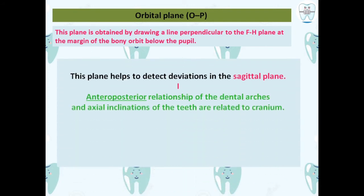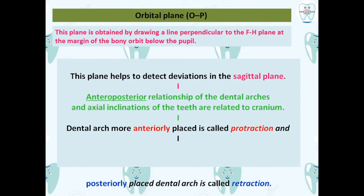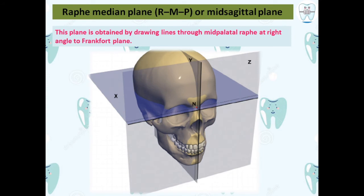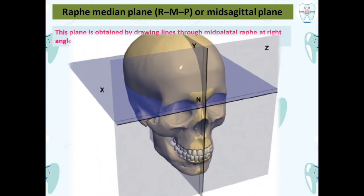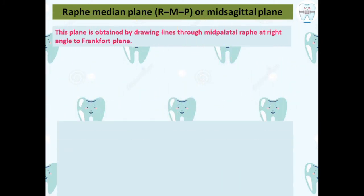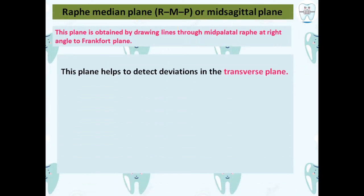Next is the Raphae Median Plane (RMP), also called the mid-sagittal plane. This plane is obtained by drawing lines through the mid-palatal raphae at right angles to the FH plane. The plane marked as Y in the figure is the mid-sagittal plane. This plane helps detect deviations in the transverse direction.